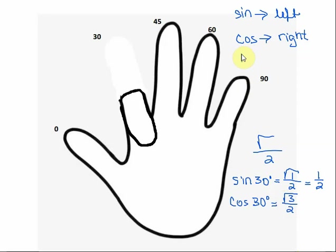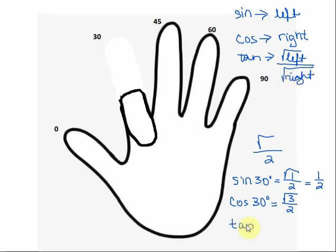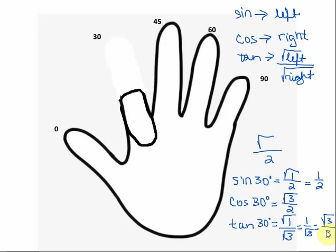For tangent, we don't use that square root over two. For tangent, it's just going to be the square root of the number of fingers to the left over the square root of the number of fingers to the right. For the tangent of 30 degrees, the number of fingers to the left is one, so it's the square root of one over the square root of three. The square root of one is one, so that's one over the square root of three, but we rationalize to get the square root of three over three.